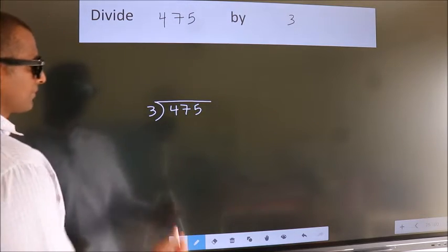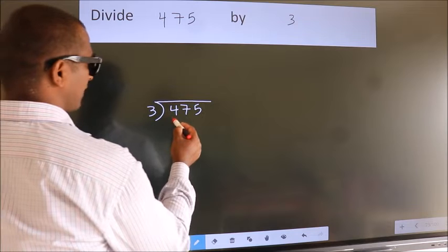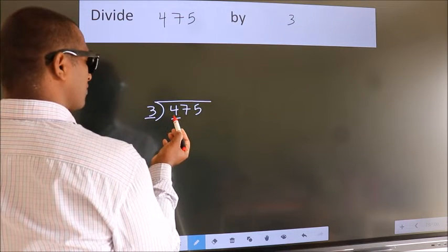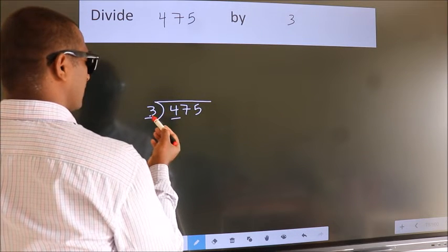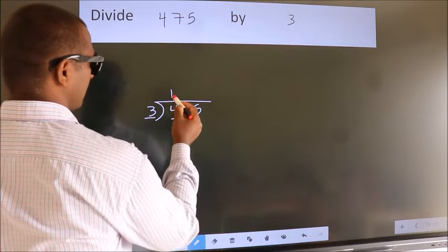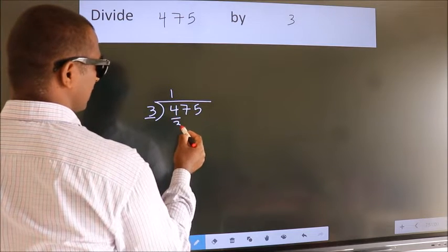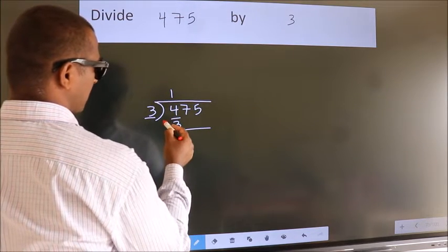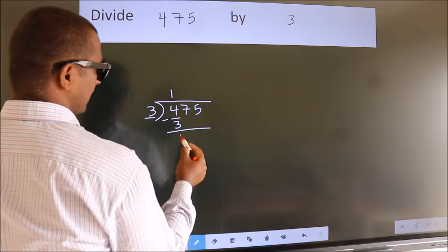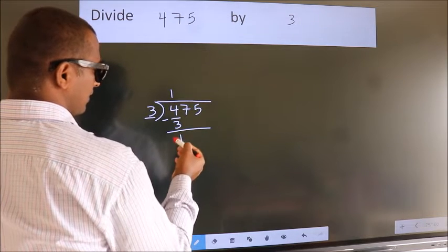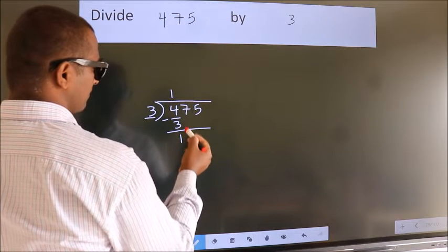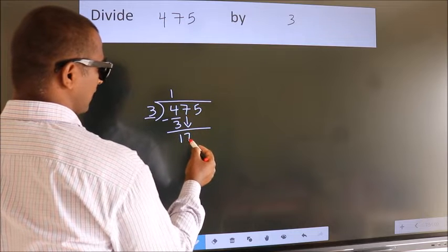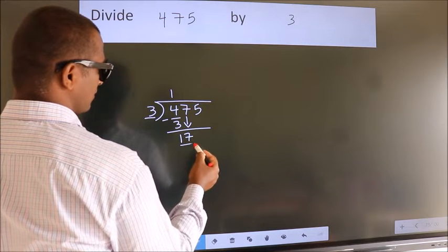Next, here we have 4, here 3. A number close to 4 in the 3 times table is 3 once 3. Now we should subtract. We get 1. After this, bring down the beside number. So, 7 down. So, 17.